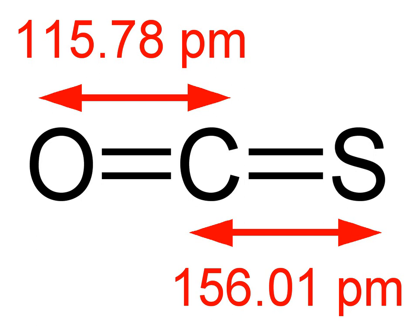Carbonyl sulfide is the chemical compound with the linear formula OCS, normally written as COS, a chemical formula that does not imply its structure. It is a colorless flammable gas with an unpleasant odor.